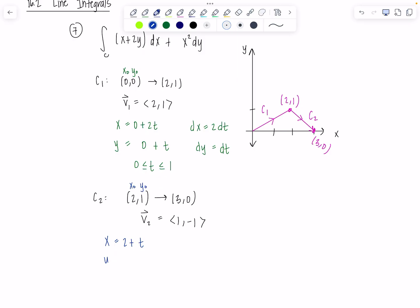Also line segment, right? What do I use for X naught, Y naught? 2, 1. There's X naught, there's Y naught. So X equals 2 plus 1T. Y equals 1 minus T. So what's DX? DT and DY? Negative DT. Perfect.